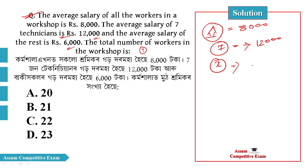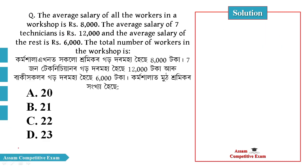The total number of workers gives an average of 8000. We have 7 technicians at 12000. The rest earn 6000. Let x be the number of remaining workers. We need to find x.